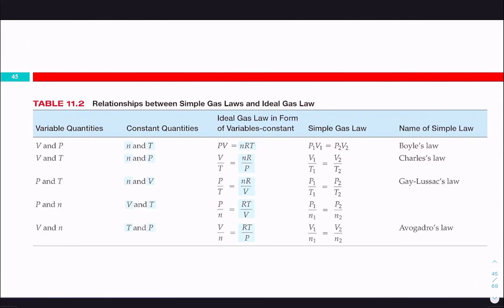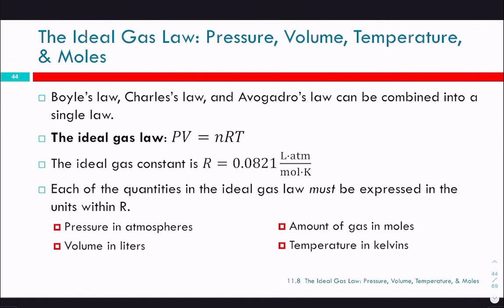Now, the last thing we'll introduce here is the ideal gas law. The limitation of Boyle's, Charles', combined, and Avogadro's laws is that you have to know initial conditions to calculate final conditions—you can only look at changes. If I told you I have a balloon with one mole of gas at 273 Kelvin and 1 atmosphere pressure, you couldn't tell me how big that balloon is with any of the laws we have so far, because nothing has changed.